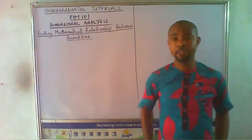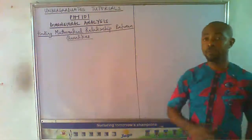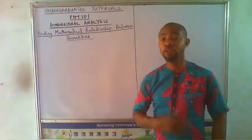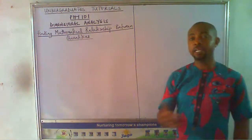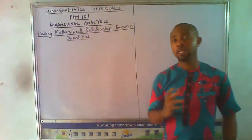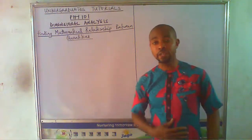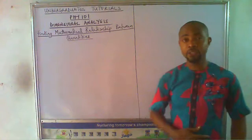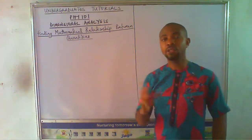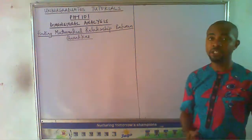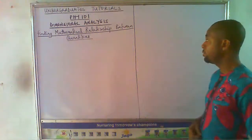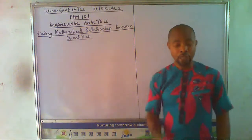We are back again. It is still undergraduate tutorials, a beautiful program designed for beautiful and handsome people like you. Once you are a science student in the university or offering a science-related course like engineering, this program is for you. This is the physics 101 of undergraduate tutorials. We are still looking at dimensional analysis, and our business today is to look at the third aspect: how we can find mathematical relationships between quantities using the principle of dimensional analysis.